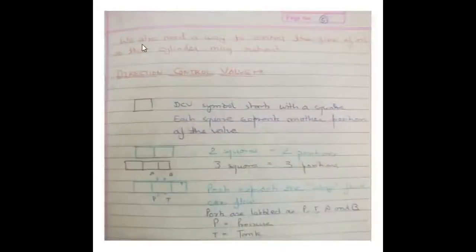Direction control valves. Now we also need a way to control the flow of oil so that cylinder may retract or expand. For this we are using direction control valves. Direction control valve symbol starts with a square.